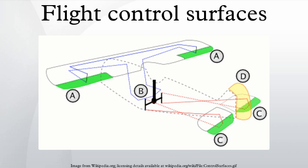So moving the stick left causes the left wing to drop and the right wing to rise. This causes the aircraft to roll to the left and begin to turn to the left.